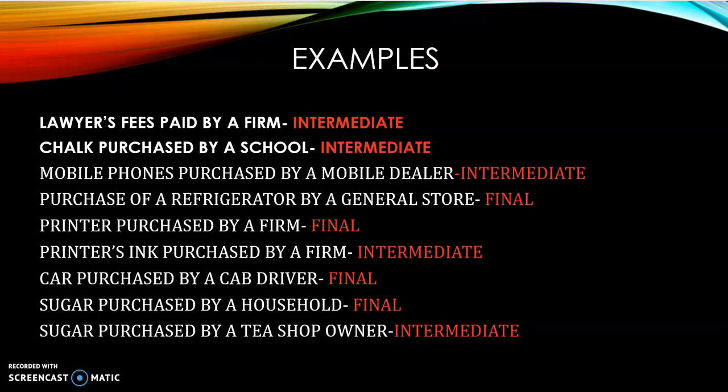Coming to the examples. Lawyer's fees paid by a firm — people think it's a factor income, but no. It is an expenditure for the firm, so it is intermediate expenditure. The same lawyer, if giving a service to a consumer or household — say for a property dispute or divorce case — that lawyer's fees paid by the individual is final expenditure. Similarly, when a firm pays a CA or an advertising firm, those are all intermediate costs, because the value is already added into their product.